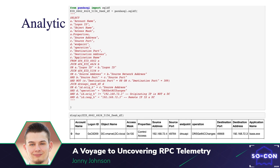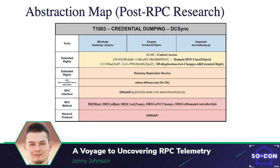Here is the final product of the abstraction map for DC Sync. As you can see it's a lot more robust and detailed, with much more context surrounding the different components. This is ultimately the goal of the abstraction — to give as much contextual detail to the specific components as possible regarding how an attacker can implement or leverage the attack they are trying to do.